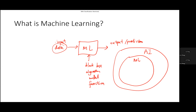We also hear terms like deep learning, abbreviated DL. Deep learning is a very specific subdomain of machine learning — it specifically involves the use of neural networks to build a model. Different models may use different tools, but deep learning uses neural networks. This is a subfield within machine learning.